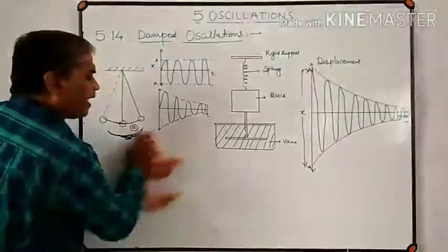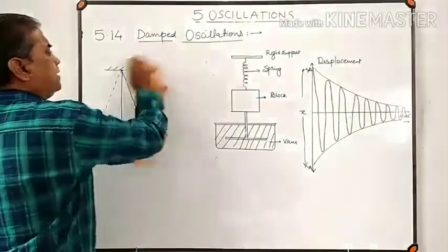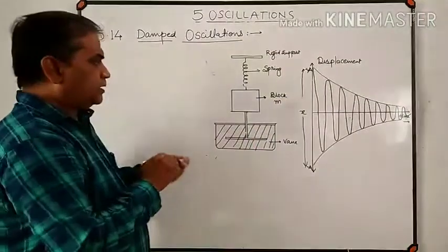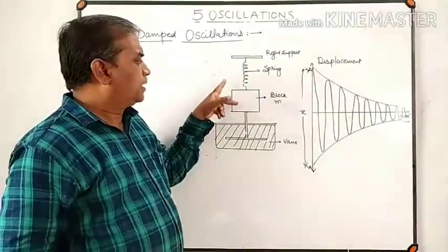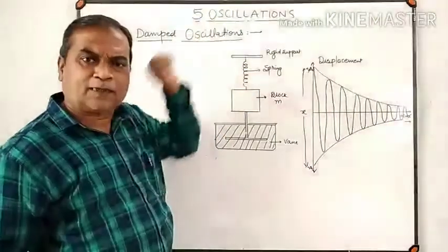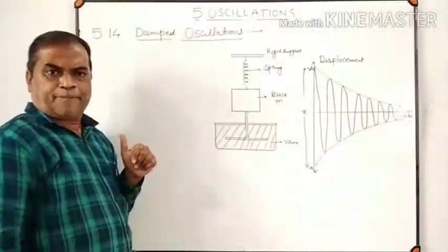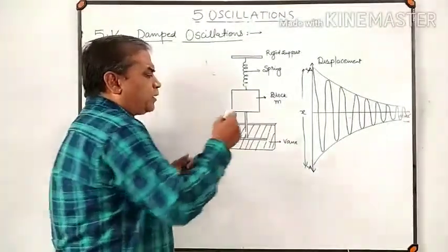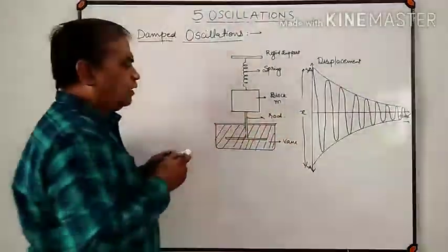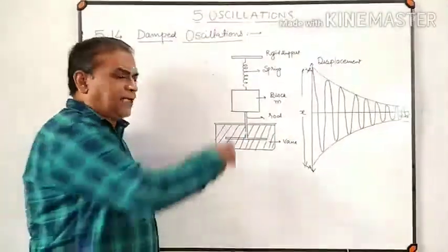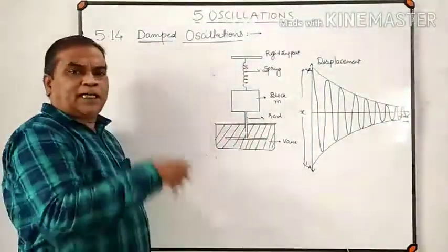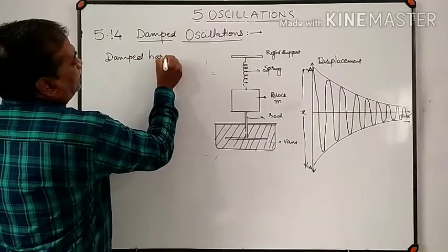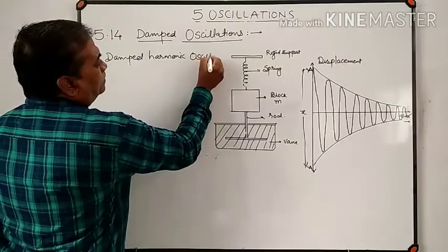One example of a damped harmonic oscillator is a block of mass M attached to a spring, which is fixed to a rigid support. A vane is attached to the block with the help of a rod. This complete system works as a damped harmonic oscillator.